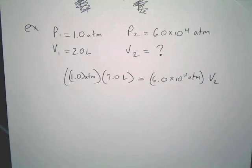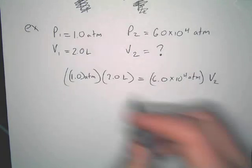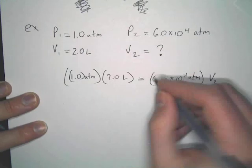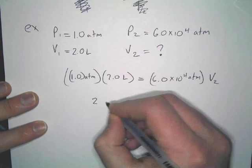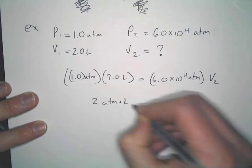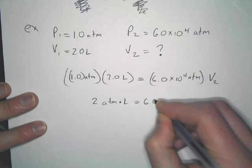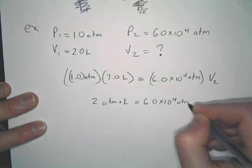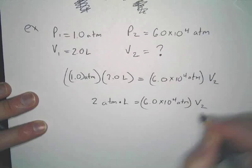Now, just to show you, what units is our volume going to be in? Our second volume, what units should it be in? Whatever we started with, it'll be liters. But just to show you today, so we'll multiply 1 times 2, so that gives us 2 atmospheres liters is equal to...